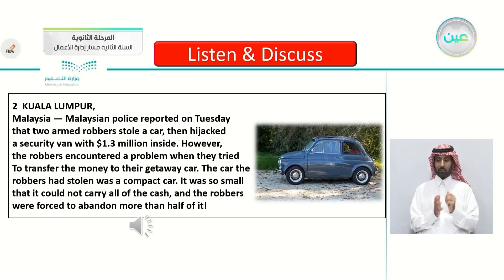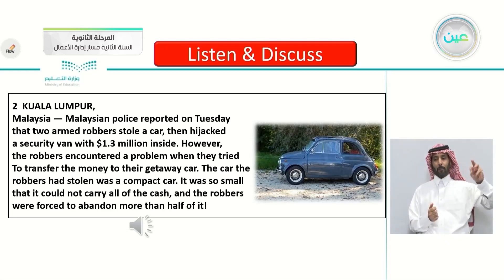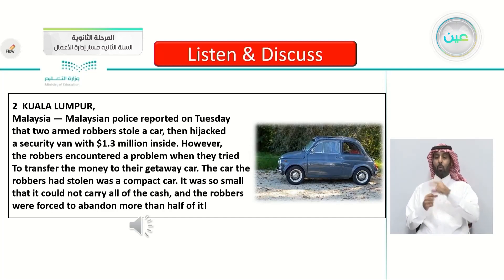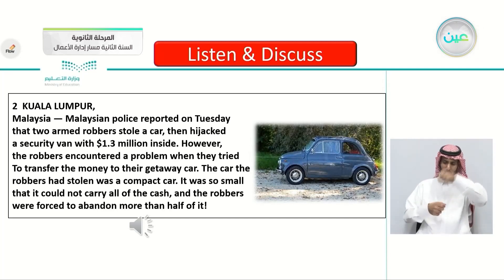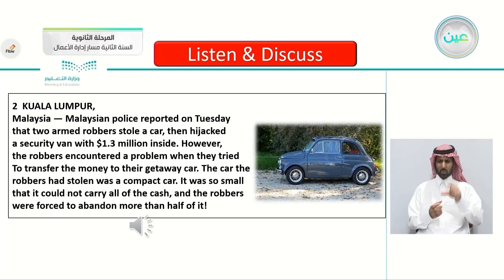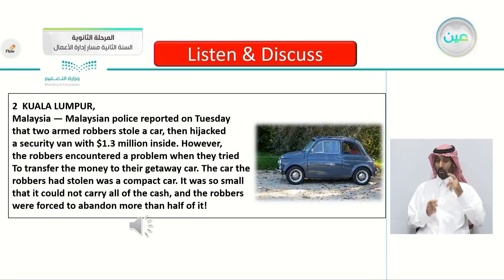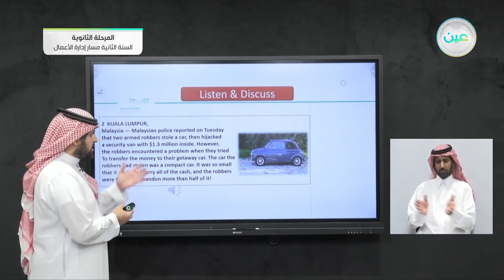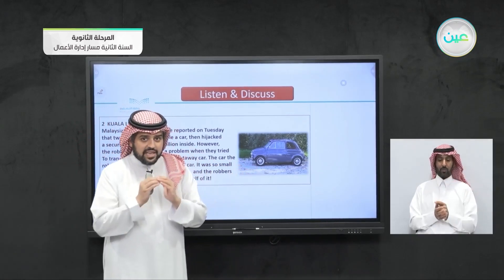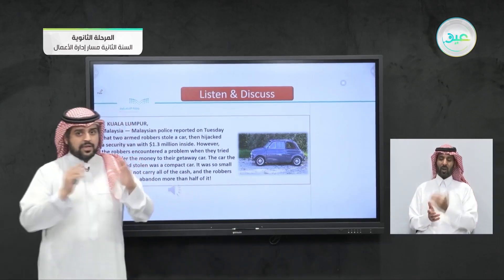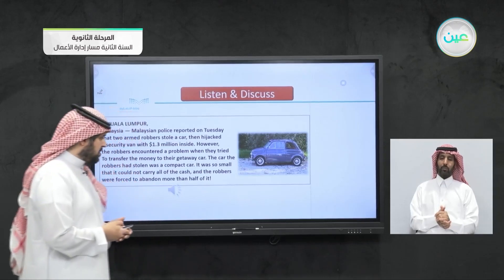Jumping to the next article — you can see the small car here. Kuala Lumpur, Malaysia. Malaysian police reported on Tuesday that two armed robbers stole a car, then hijacked a security van with $1.3 million inside. However, the robbers encountered a problem when they tried to transfer the money to their getaway car. The car the robbers had stolen was a compact car — it was so small that it could not carry all of the cash, and the robbers were forced to abandon more than half of it.